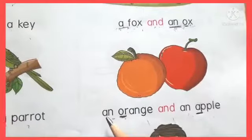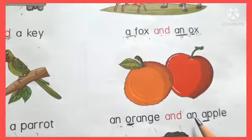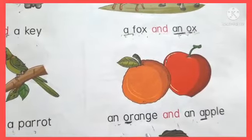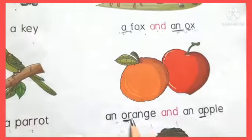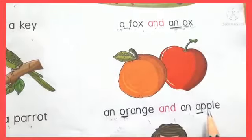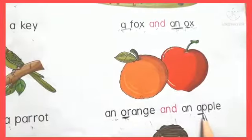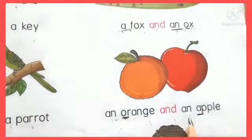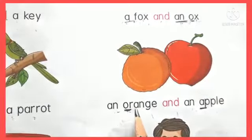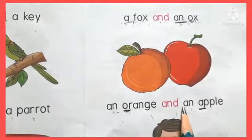Now here, see: an orange and an apple. Ek santra or ek sev. Here, again, you see the first letter in orange is O, and in apple the first letter is A, and both are vowels. O and A are vowels, so before the vowel we use 'an'. We have to use 'an'.